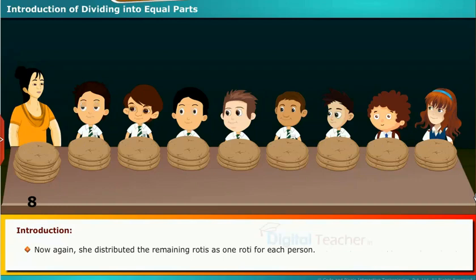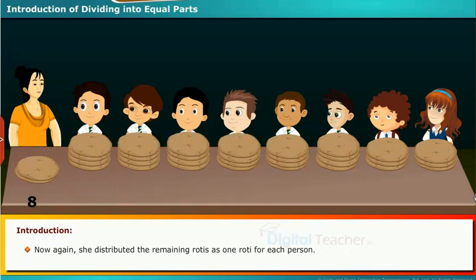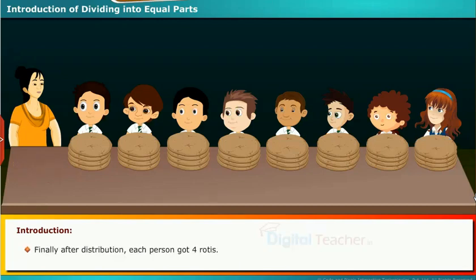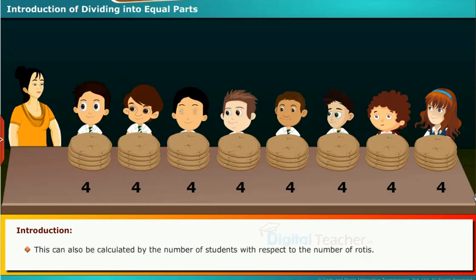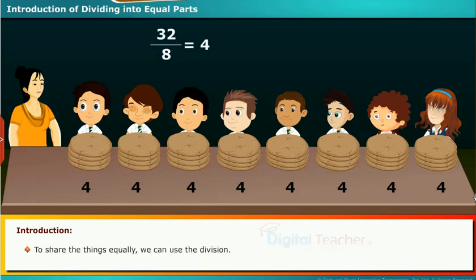She distributed the remaining rotis one more time, and finally each person got 4 rotis. This can also be calculated by dividing the number of rotis by the number of students. To share things equally, we can use division.